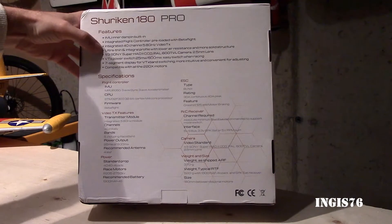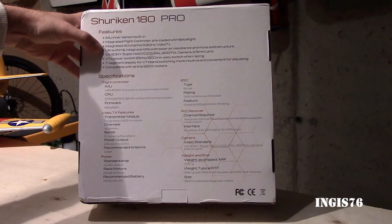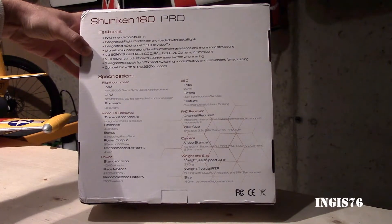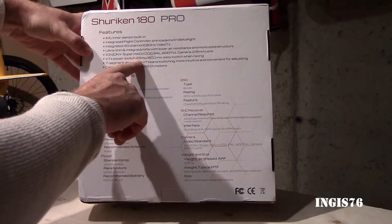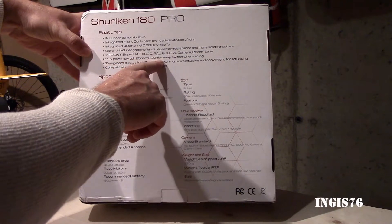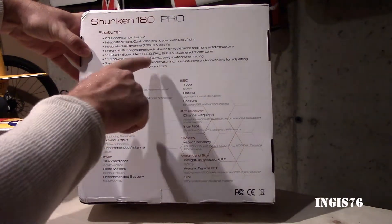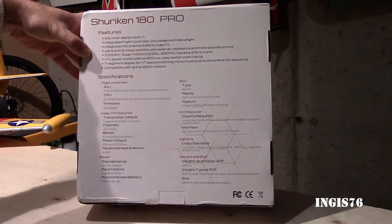It has an integrated 40-channel 5.8GHz transmitter with 25 milliwatt or 600 milliwatt power settings, so you can switch from these two, and I'm gonna use the 600 of course.